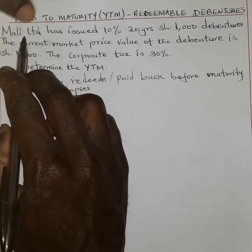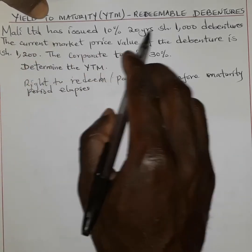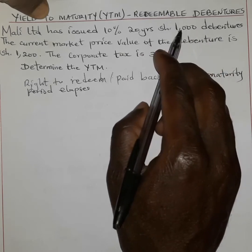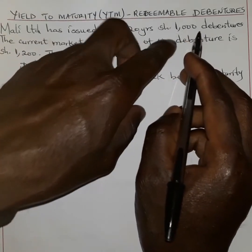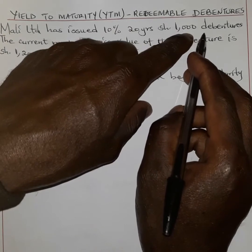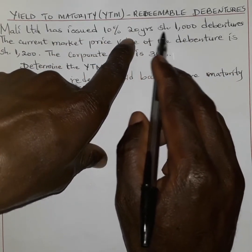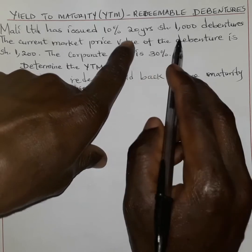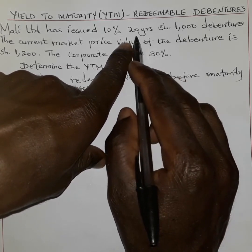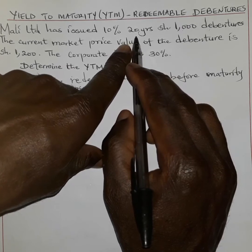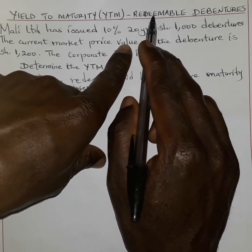In this case we are told that a firm has issued 10%, 20-year, 1000 debentures. The 1000 is the par value — the nominal value written on the face of these debentures. So it means the holders of these 10% debentures can be paid back even before the 20 years elapses. That's why they are called redeemable — they can be redeemed during the lifetime before maturity.